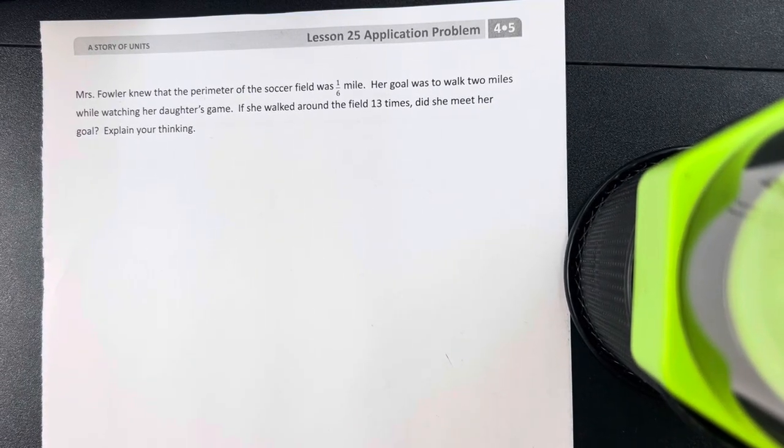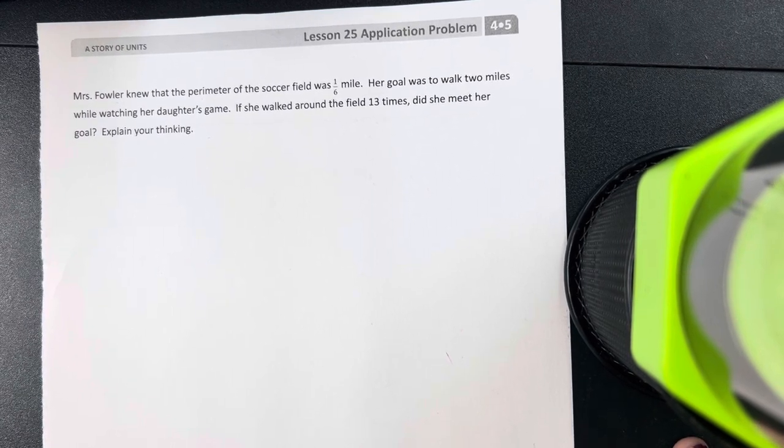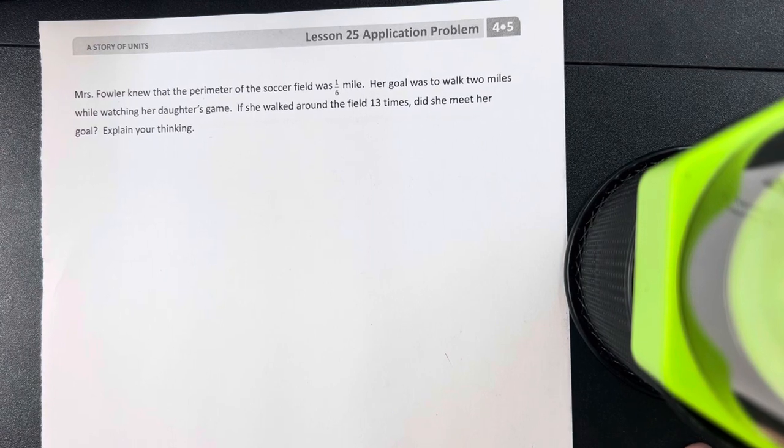All right, we're going to read the problem. Mrs. Fowler knew the perimeter of the soccer field was one-sixth of a mile. Her goal was to walk two miles while watching her daughter's game. If she walked around the field 13 times, did she meet her goal? Explain your thinking.